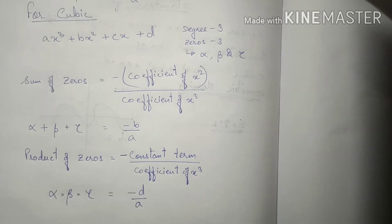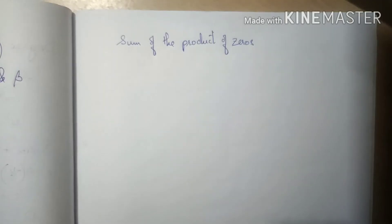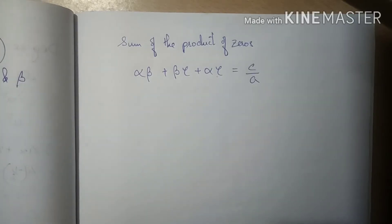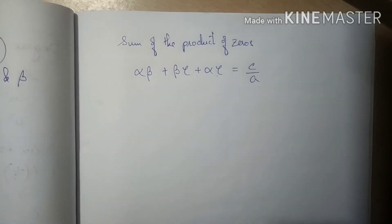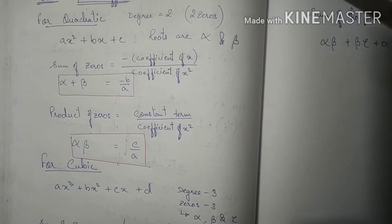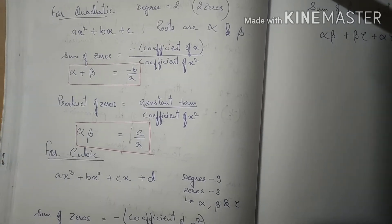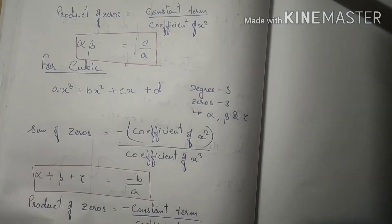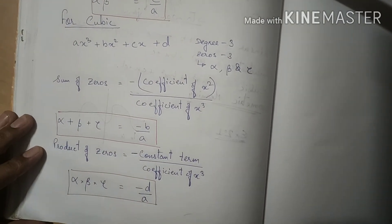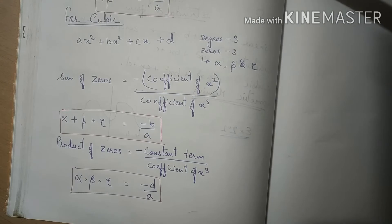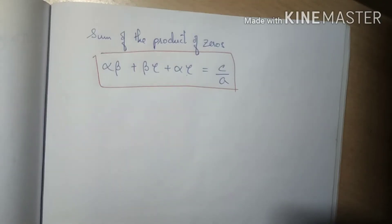For the quadratic there was no negative sign for that expression, but for cubic there is. There is also another expression specific to cubic polynomials: the sum of the product of zeros taken two at a time. These are very important formulas — write them in your copy, make notes, and add them to your formula chart.